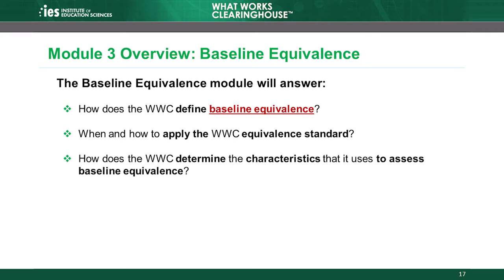The third module discusses the concept of baseline equivalence — whether the intervention and comparison groups in a study were similar before the start of an intervention. This module reviews how the WWC defines baseline equivalence and demonstrates when and how to apply the WWC equivalence standard. We also cover how the WWC determines the characteristics that it uses to assess baseline equivalence.